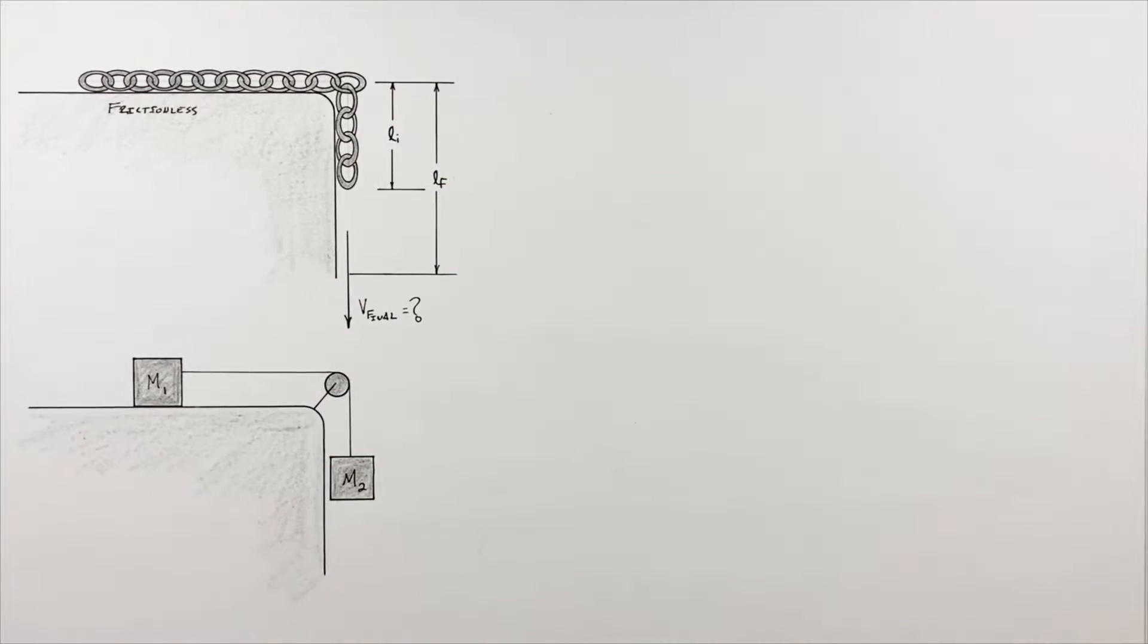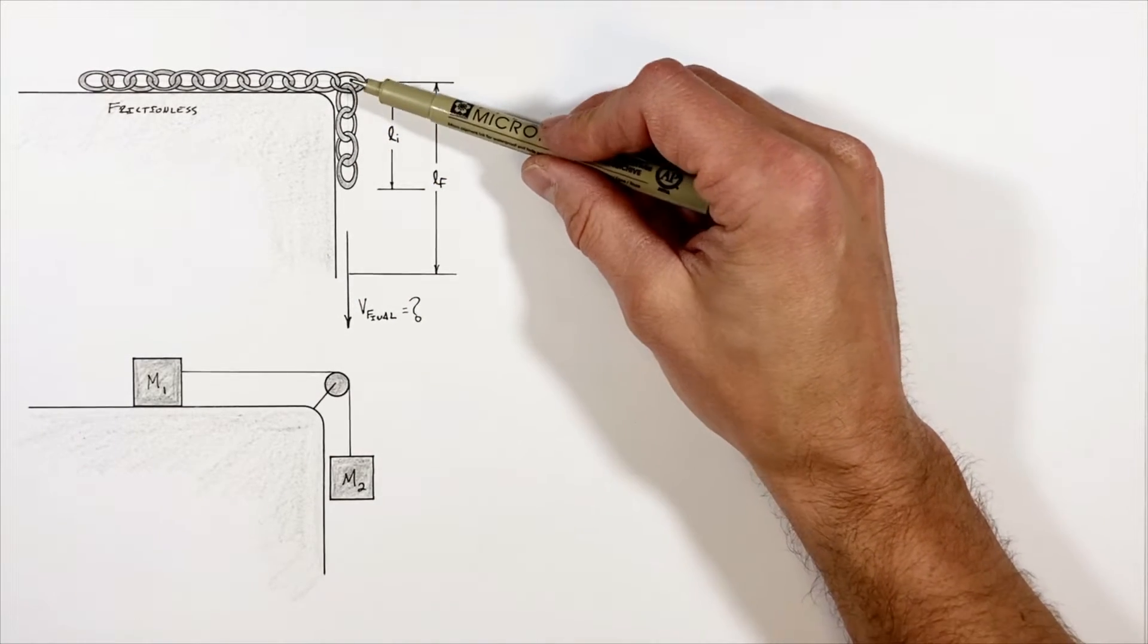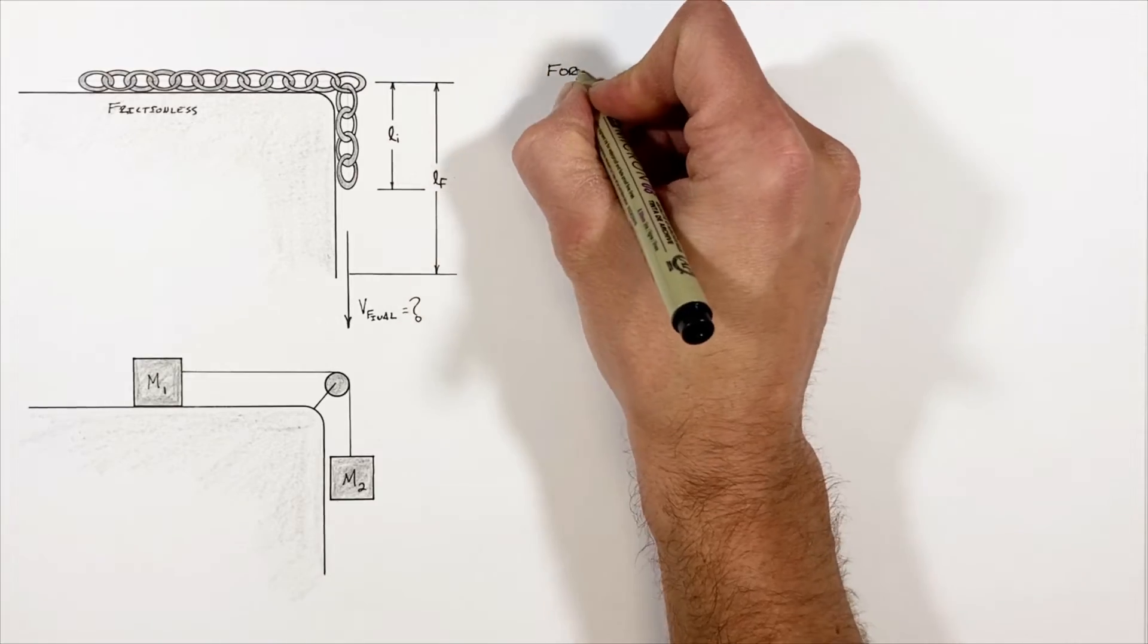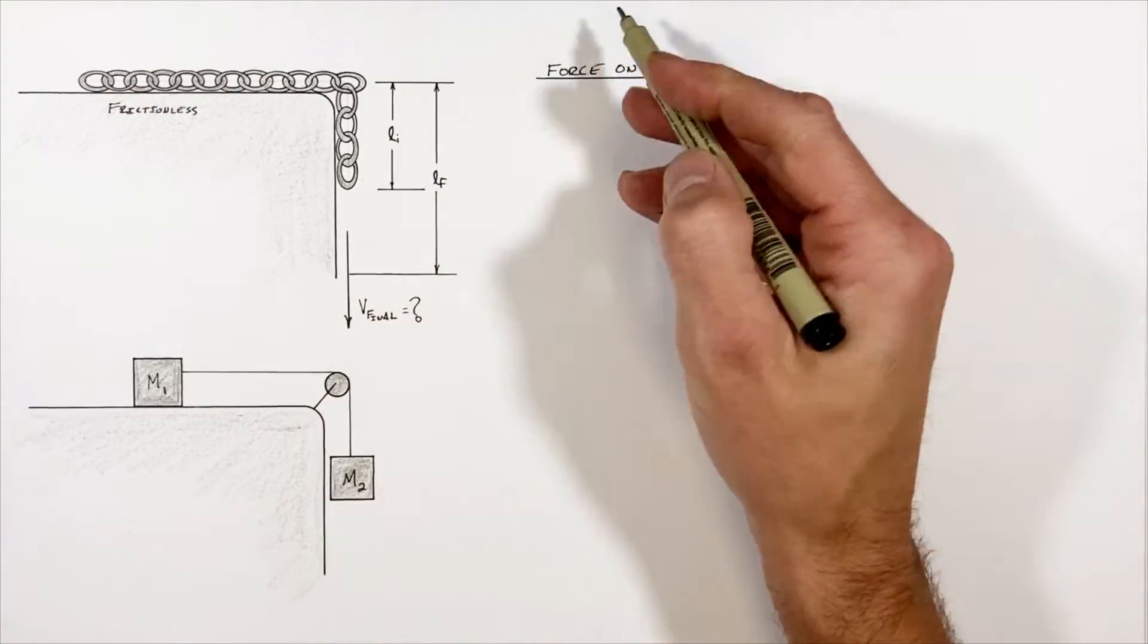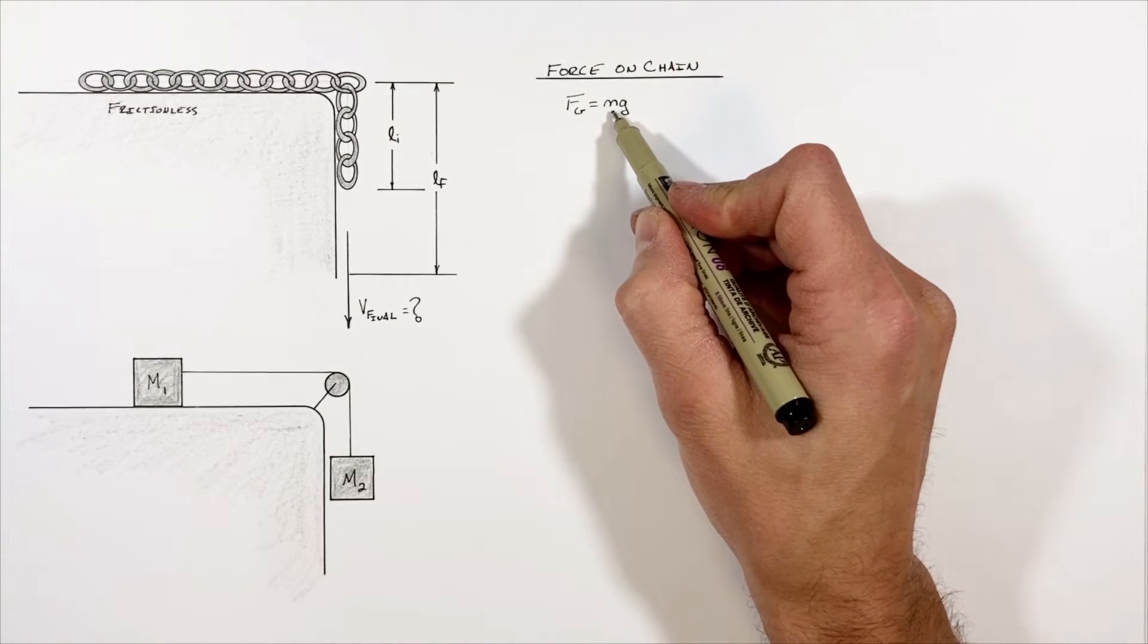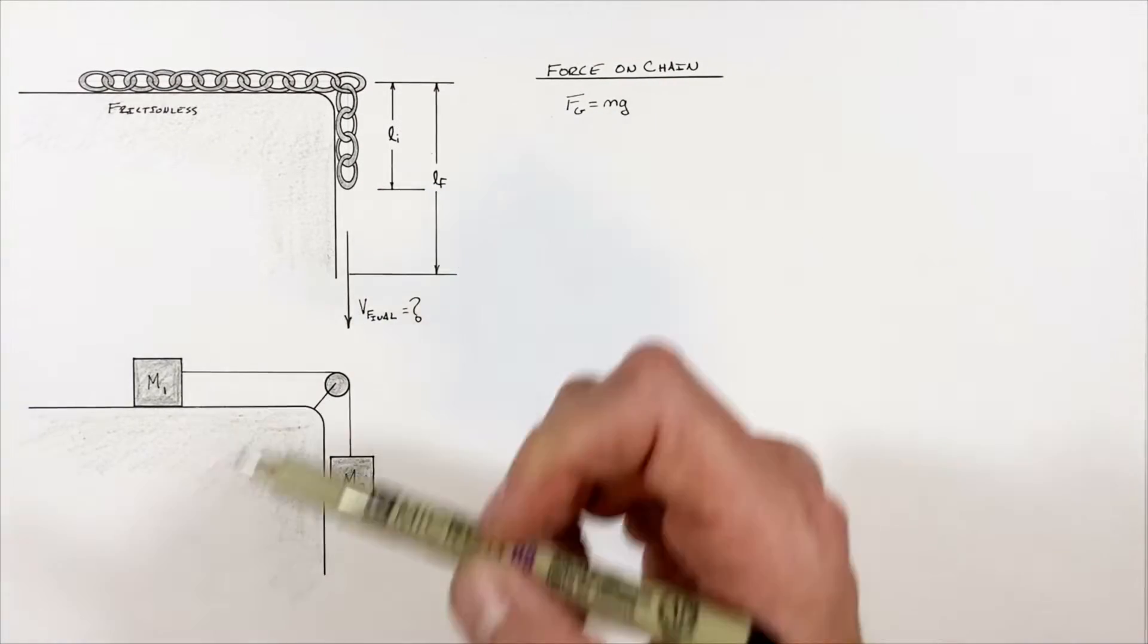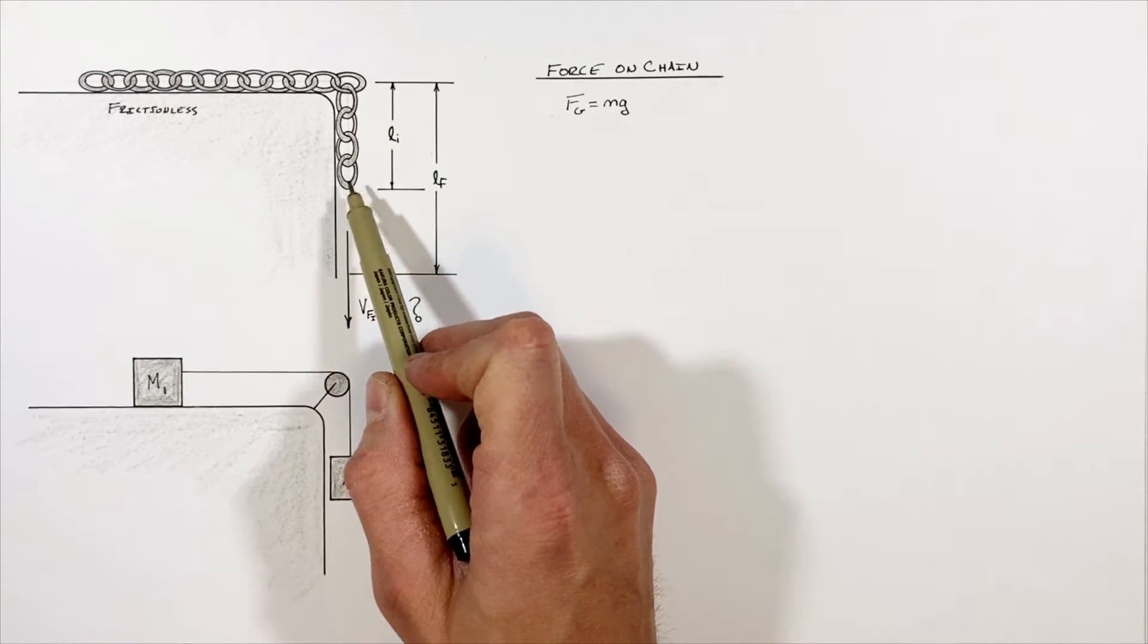So to solve for the final velocity of this chain, I first want to take a look at the force which is acting on this length of chain that's hanging off the edge of the table. The force by gravity on this length of chain is Fg. The issue being we have to relate the mass of chain hanging off the edge of the table to the actual length of chain hanging off the table. But realize if this chain has some total length L and some total mass M, then it has a mass per unit length which we're going to call lambda, that is M over L.